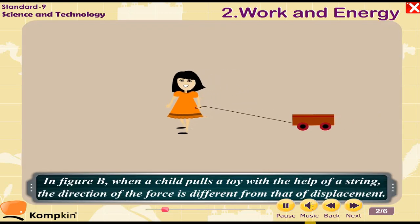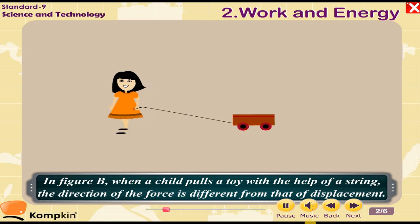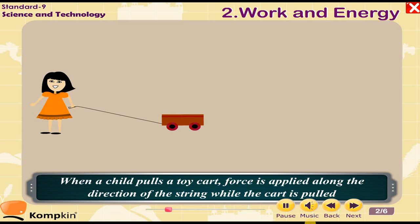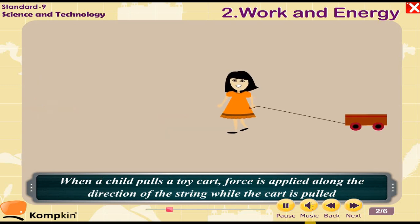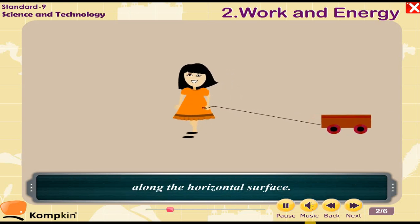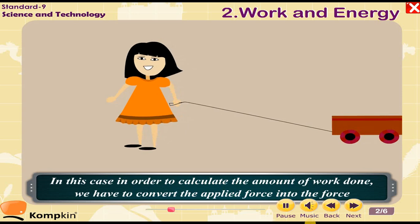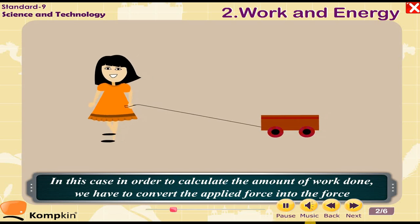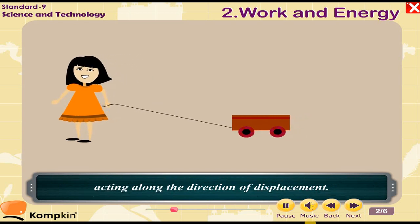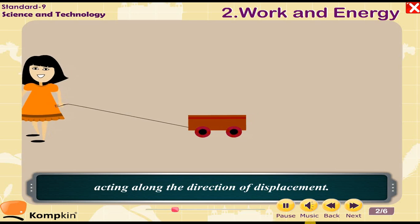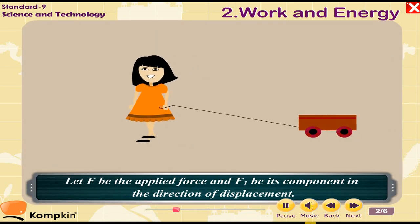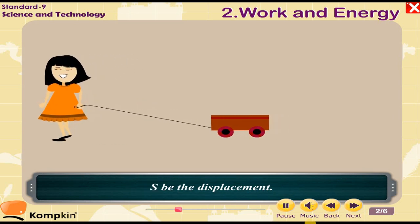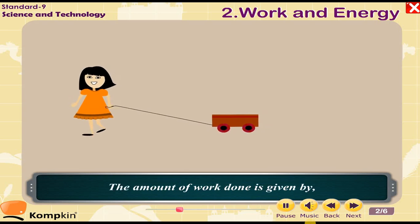In figure B, when a child pulls a toy with the help of a string, the direction of the force is different from that of displacement. The force is applied along the direction of the string while the cart moves along the horizontal surface. In this case, to calculate the work done, we have to convert the applied force into the component acting along the direction of displacement. Let F be the applied force, F1 be its component in the direction of displacement, and S be the displacement.